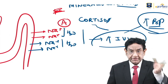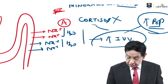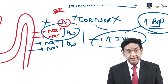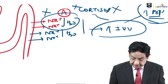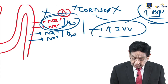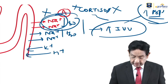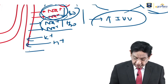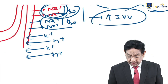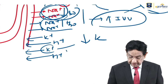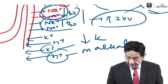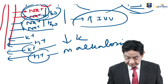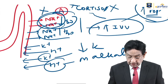In Addison disease, the reverse happens: no cortisol, no aldosterone — sodium and water not reabsorbed, reduced intravascular volume, low BP, and reduced blood sugar (reduced glycogenolysis and gluconeogenesis). Therefore, the most common presenting feature of Addison disease is fatigue, malaise, and asthenia — due to low sugar and low BP.